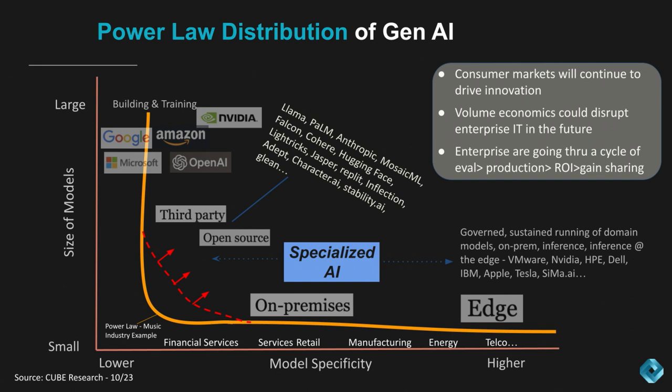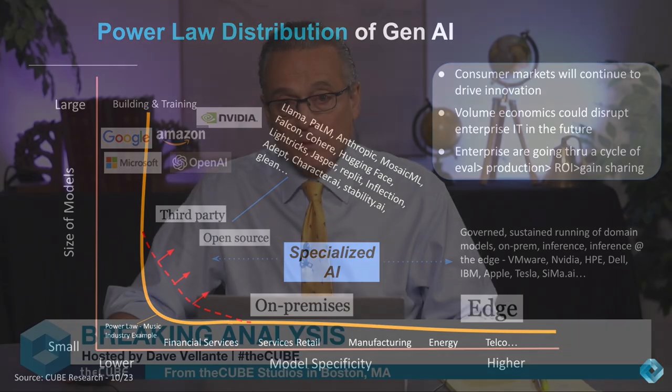There's no hard data on this, but in our conversations with various industry sources, it's indicated that over 50% of the Llama 2 deployments could very well be on-prem. At the very least, the majority of the downloads are from companies that have significant in-house data center deployments or colos. This fits squarely into our thinking on the long tail of the application of smaller models.